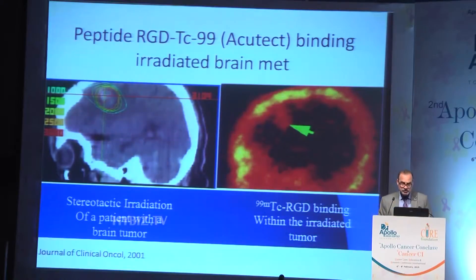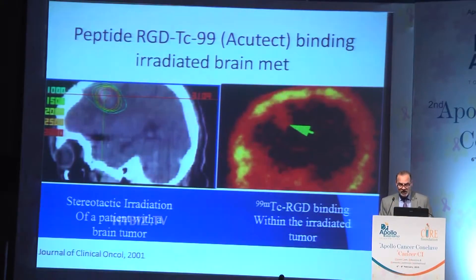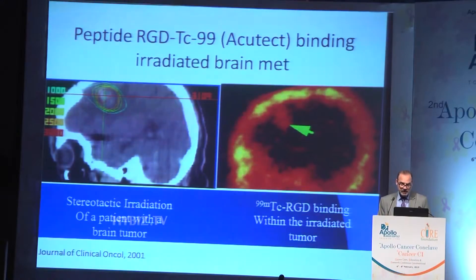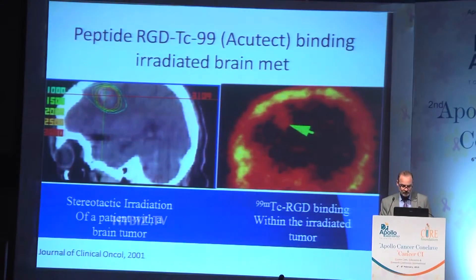This is one of the clinical trials that we conducted. This is with a peptide called RGD. The tumor is treated with stereotactic irradiation, the radiolabeled RGD is then administered, and we're able to see the peptide binding within the tumor in a patient's brain.